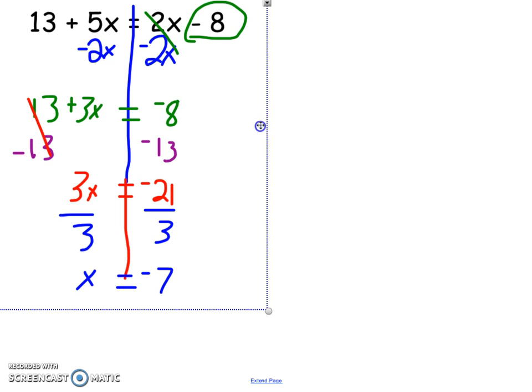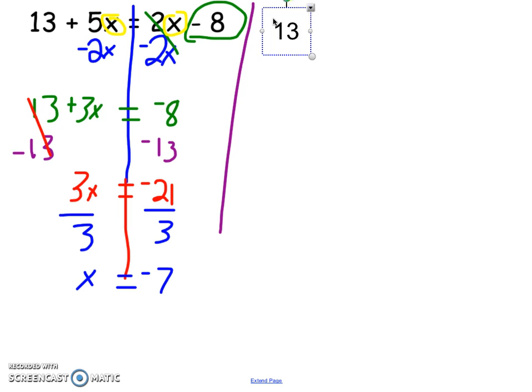If I check that answer, I'm going to put in a negative 7 for all of the x values here. So that's going to give me, I'm going to type this out, it'll be a little bit neater. 13 plus 5 times negative 7. Does that actually equal 2 times negative 7 minus 8? Well, 5 times negative 7 is a negative 35, so I've got 13 plus negative 35.